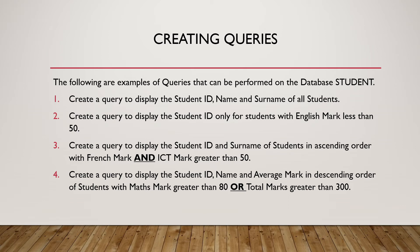We are going to look at four example queries performed on the student database. First: create a query to display the student ID, name, and surname of all students. Second: display the student ID only for students with English mark less than 50. Third: display the student ID and surname of students in ascending order with French mark and ICT mark both greater than 50 — this uses an AND condition. Fourth: display the student ID, name, and average mark in descending order for students with maths mark greater than 80 or total marks greater than 300 — this uses an OR condition.